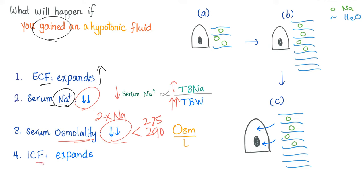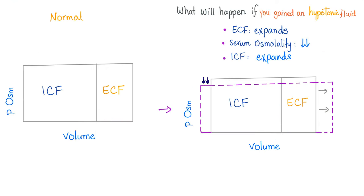What happened to the ICF compartment? We gained lots of water but not much sodium, so the sodium concentration inside the cell is relatively higher than in the plasma. Water follows sodium into the ICF compartment — the ICF expands and your cells swell. If this is your brain, you get mental status abnormalities. On the graph: decrease the y-axis (osmolality decreased), expand the ECF on the x-axis, and also expand the ICF because water moved from ECF to ICF.